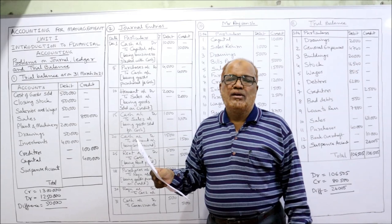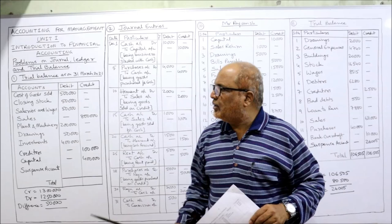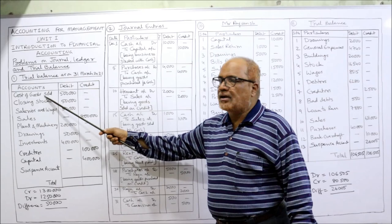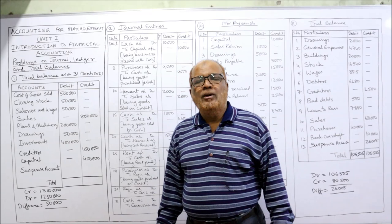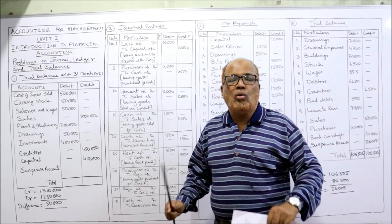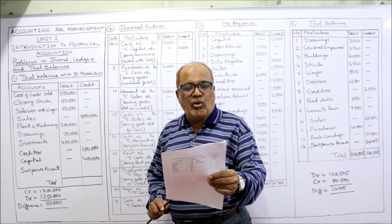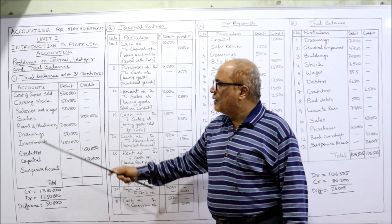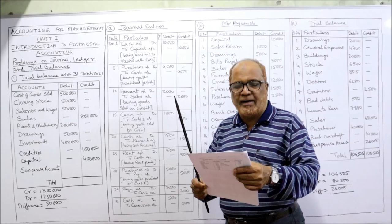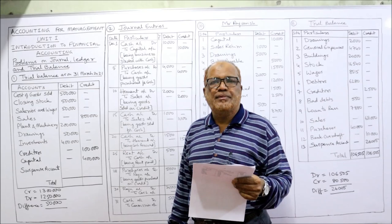First item: cost of goods sold is an expenditure, so it will be taken on the debit side — 5 lakh. Opening stock has already been considered in cost of goods sold, so opening stock will not be taken in trial balance — ignore it. Closing stock is an asset, so debit balance — closing stock debit side 50,000. Salaries and wages is an expenditure — debit balance 50,000.